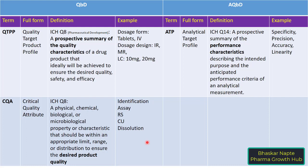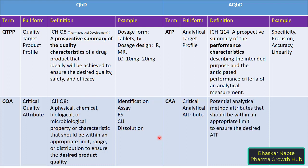The equivalent term in AQBD is CAA, or Critical Analytical Attributes. The definition is: the potential analytical method attributes that should be within an appropriate limit to ensure the desired ATP. The critical analytical attributes help you achieve your proposed ATP and meet the performance characteristics that define method validation.